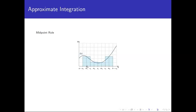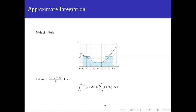The midpoint mᵢ is used to compute the height of the rectangle by plugging it into the function, and delta x is used as the width. In general, mᵢ is the average of x sub (i-1) and xᵢ. The midpoint rule says we approximate the definite integral by summing the function values evaluated at the midpoints, multiplied by delta x, over however many intervals we've divided the interval into.